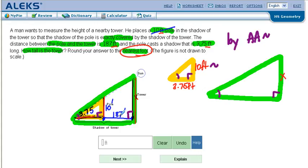And then this is the sand trap here. Very important. This entire length is not 187. That's the shadow of the tower. That entire length is 187 plus 3.75.